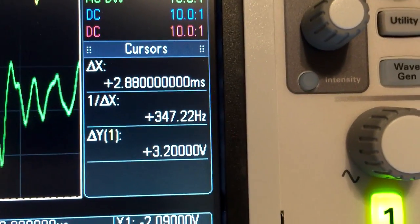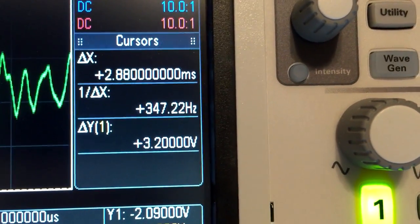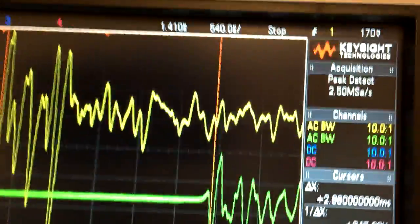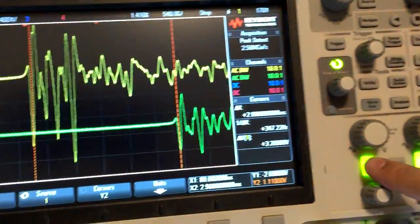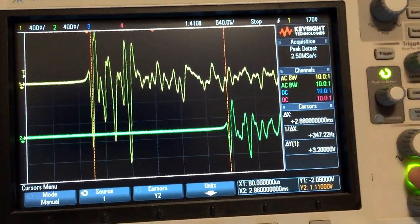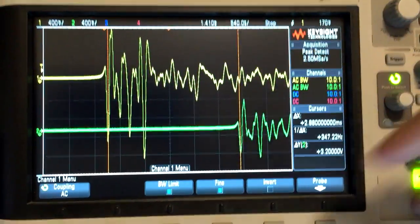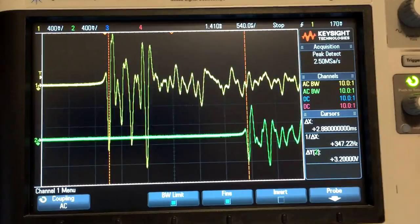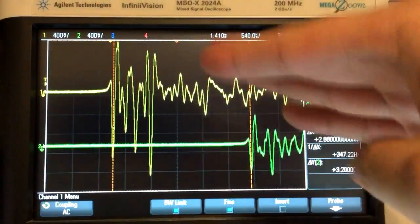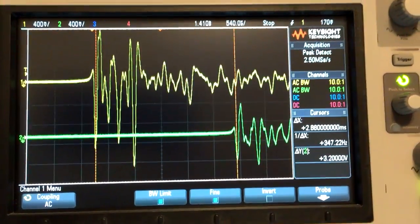So 2.88 milliseconds should be the distance in time between the two waveforms, and I measured it. Look what I got: Delta X, which is the difference between my two X cursors, is 2.88 milliseconds, on the money.